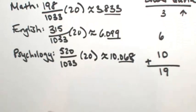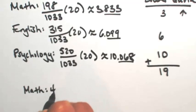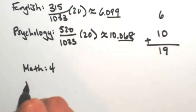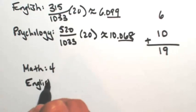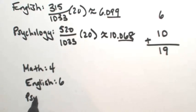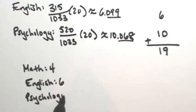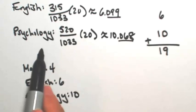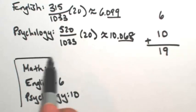The final allocation is that math will get 4 scholarships, English will get 6 scholarships, and psychology will get 10. And so all together, we have our 20 scholarships.